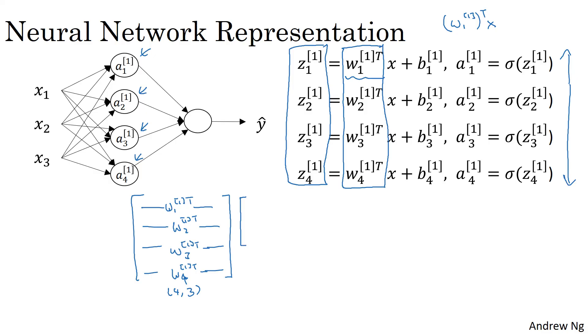So if you then take this matrix and multiply it by your input features, x1, x2, x3, you end up with, by how matrix multiplication works, you end up with w11 transpose x, w1, w21 transpose x, w31 transpose x, w41 transpose x.